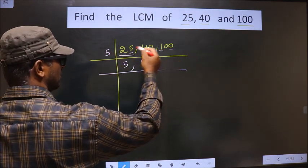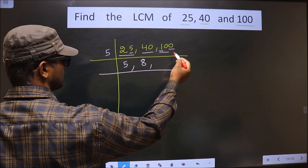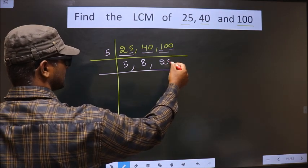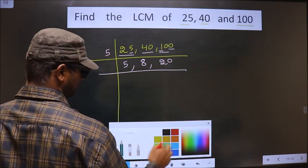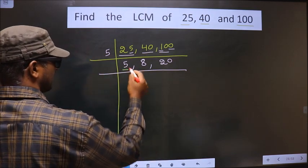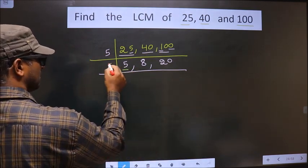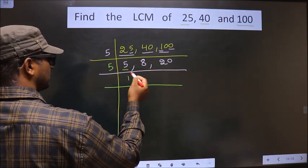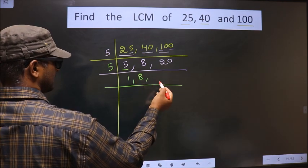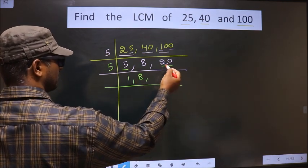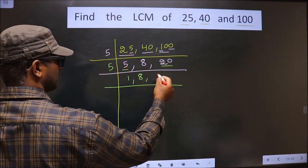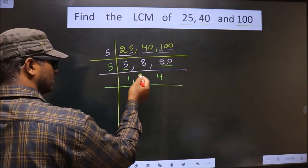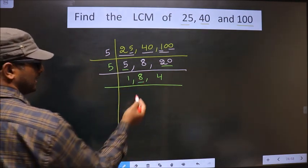The first digit of 100 is 1, which is smaller than 5, so we take two digits: 10. 10 divided by 5 is 2 (since 5×2=10). The 0 is carried down. Now we have 5, which is a prime number: 5 divided by 5 is 1. 8 is not divisible by 5, so we write down 8 as it is. We now have 20: 20 divided by 5 is 4 (since 5×4=20).